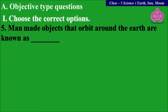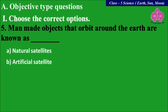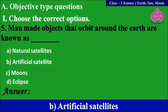Next: man-made objects that orbit around the Earth are known as dash. A: Natural satellites, B: Artificial satellites, C: Moons, D: Eclipses. The answer is B, Artificial satellites.